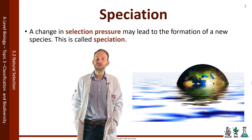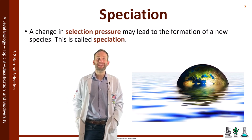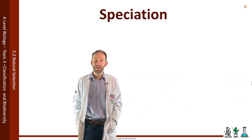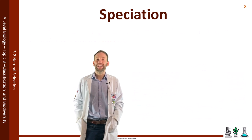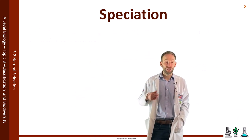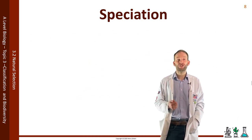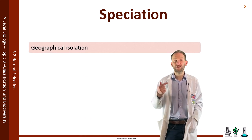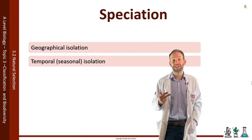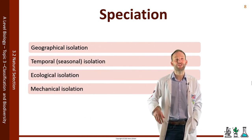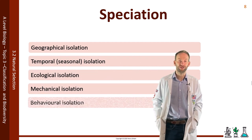For speciation to occur, two populations of a species need to be reproductively isolated. This can happen in the following ways: geographical isolation, temporal isolation, ecological isolation, mechanical isolation, and behavioural isolation.